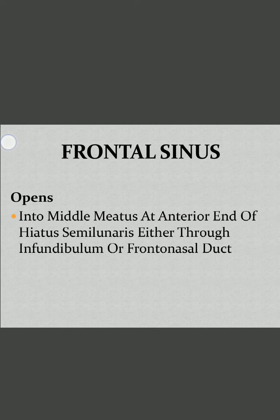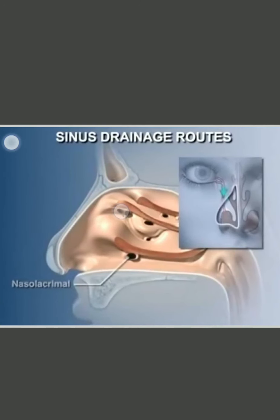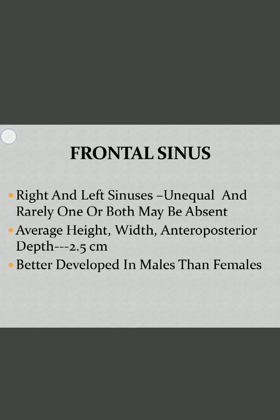The frontal sinus opens into the middle meatus at the anterior end of the hiatus semilunaris, either through the infundibulum of the hiatus semilunaris or through the frontal nasal duct. The two sinuses are bilateral but may be unequal in size, and rarely one or both may be absent. The average dimensions are approximately 2.5 cm in height, width, and anteroposterior depth. Development is better in males than females.